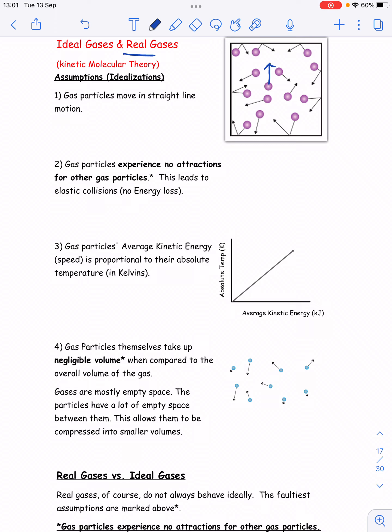Gas particles experience no attractions for other gas particles. So as this gas particle moves past this one, it doesn't feel an attraction towards it at all. It just moves on straight past it. So there's no attraction between particles. They just travel around in straight line motion.